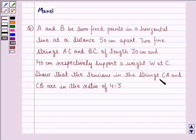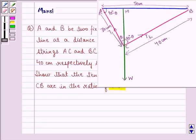Two fine strings AC and BC of length 30 cm and 40 cm respectively support a weight W at C. Show that the tensions in the strings CA and CB are in the ratio 4 is to 3.